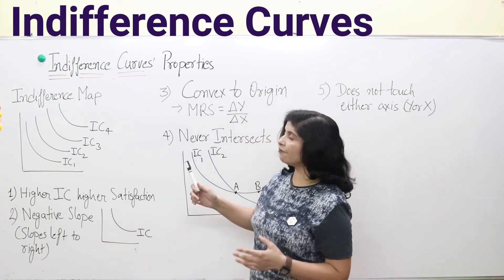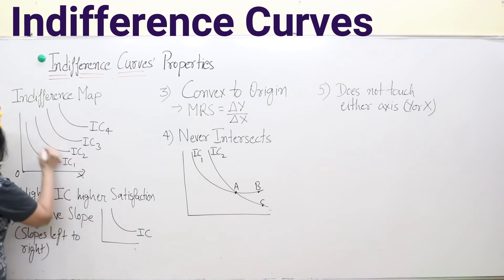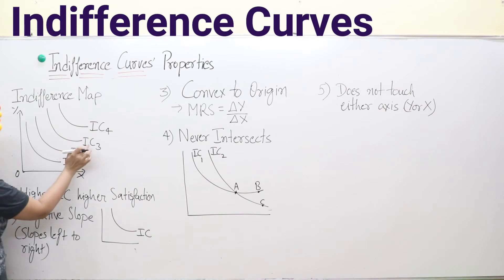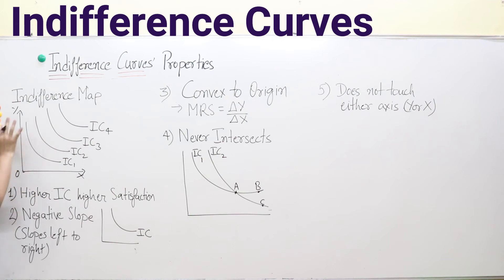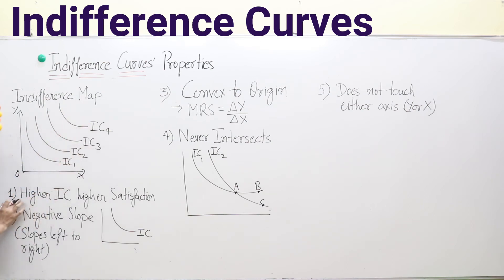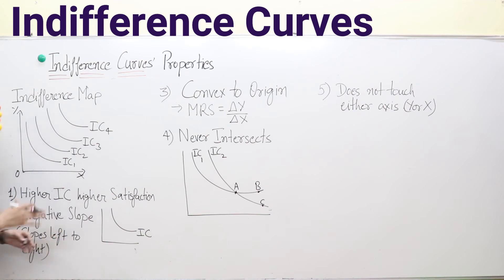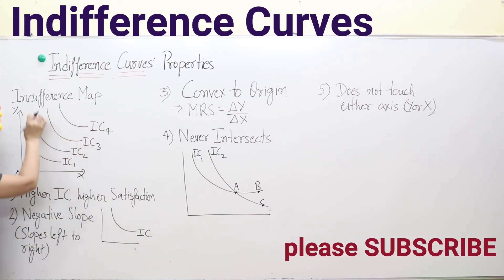Now let's discuss the properties of the indifference curve. First, the indifference map — a set of many indifference curves on one diagram, such as IC1, IC2, IC3, and IC4. IC1 is lowest, IC4 is highest. A higher indifference curve gives higher satisfaction. As we move from a lower IC to a higher IC, we get more satisfaction — due to increased income or decreased prices — but on the same IC, satisfaction remains constant across combinations.